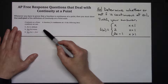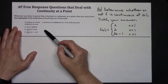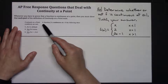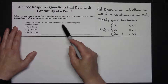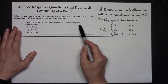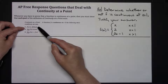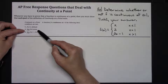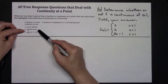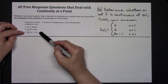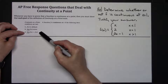I've refreshed our memory here with the definition of continuity at a point. A function f is continuous at c if the following three conditions are met: f of c is defined; the limit as x approaches c of f of x exists; and the limit as x approaches c of f of x equals f of c.